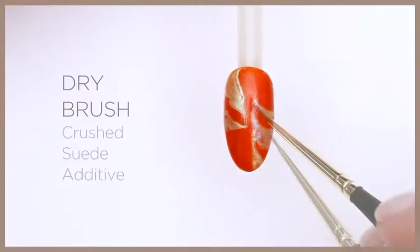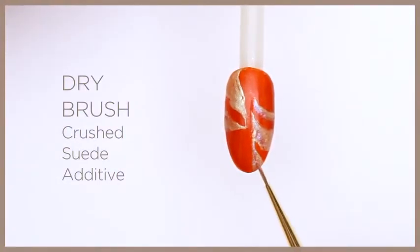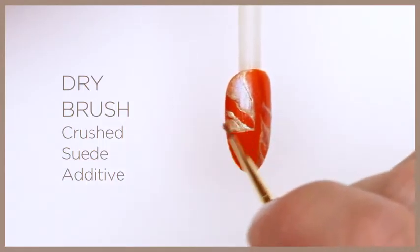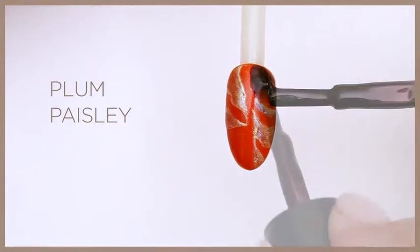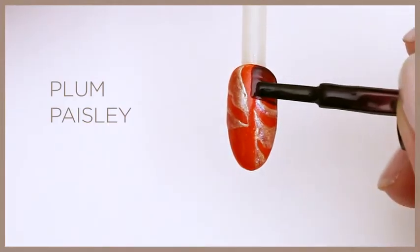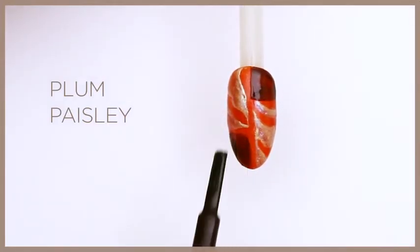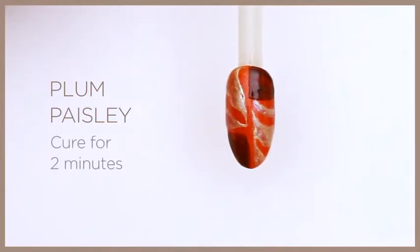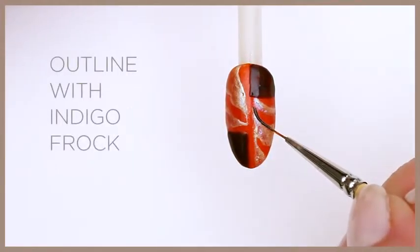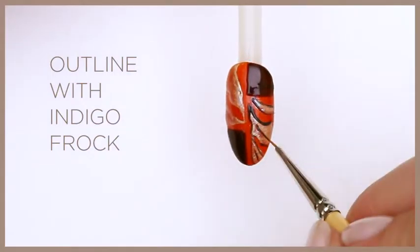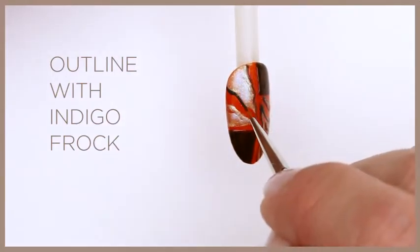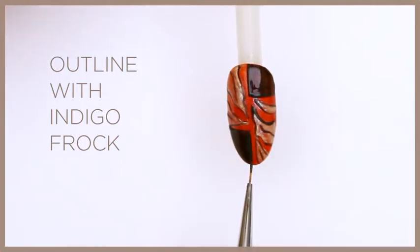Dry brush Crushed Suede additives over the gold design. Apply a thin layer of Plum Paisley over the top right corner and bottom left corner. Cure for two minutes. Use a detail brush with Indigo Frock to outline the perimeter of the nail, the Plum Paisley boxes, and the gold pattern.